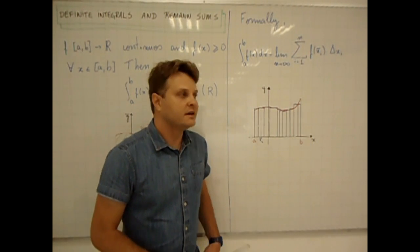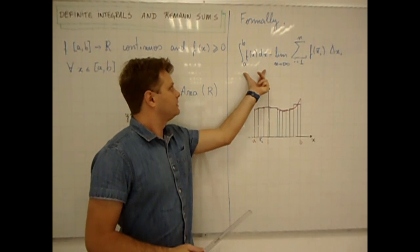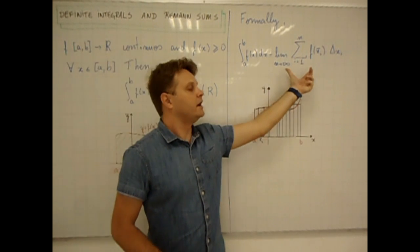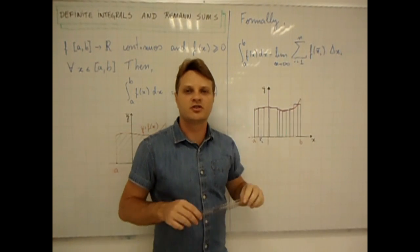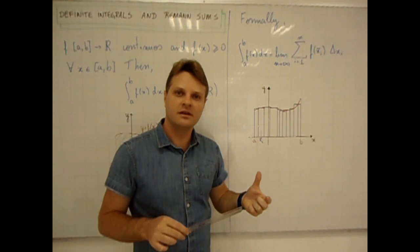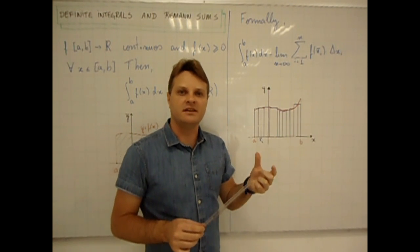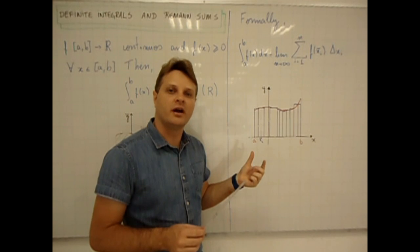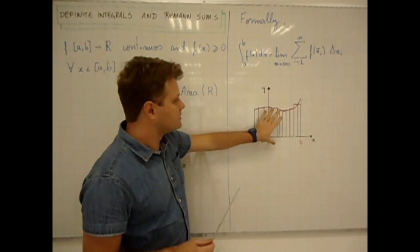Now, formally, this mathematical object is defined through Riemann sums, which, roughly speaking, is given by a limit coming from summing up the areas of arbitrary pink rectangles, as illustrated here.